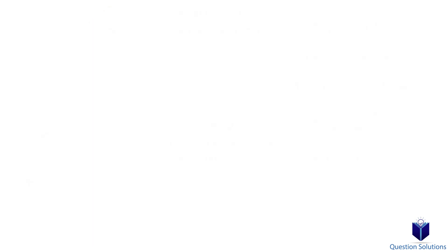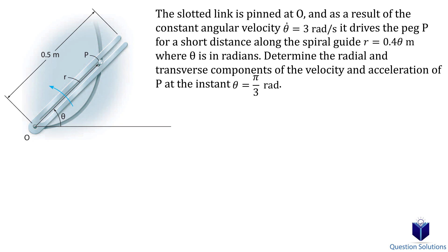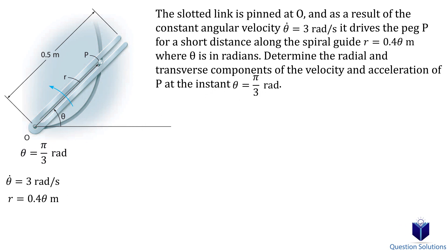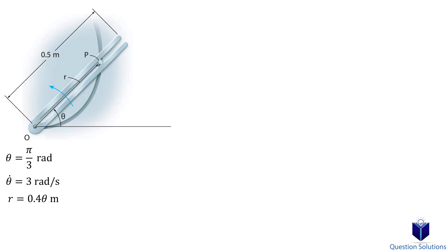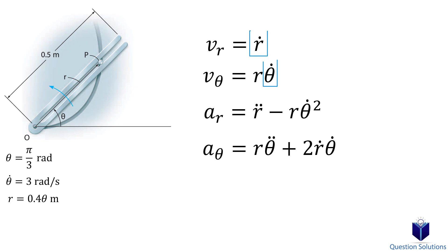Let's look at one last example. We need to determine the radial and transverse components of velocity and acceleration when theta equals pi over 3. We know the constant angular velocity and the position equation. Since this question asks for both velocity and acceleration components, two time derivatives of the position equation must be taken. If only velocity were needed, one derivative would suffice, but since acceleration is involved, we need two.